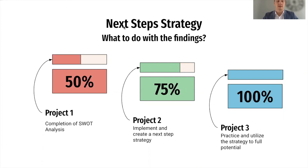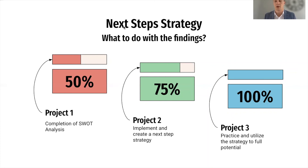Now that we have sent out and finalized our project, we understand that this is only one step of a long-scale effort. We equated the SWOT analysis completion, finalization, and distribution as only 50% of the project that needs to be done. The next step is creating and implementing a next-step strategy plan so that we can use these findings from the SWOT analysis to develop a better CAI — more efficient, goal-oriented, and collaborative. Project three is once we are practicing and utilizing the strategy to its full potential, maximizing the influence we found through the project, and working toward a better, more efficient, and positive CAI.